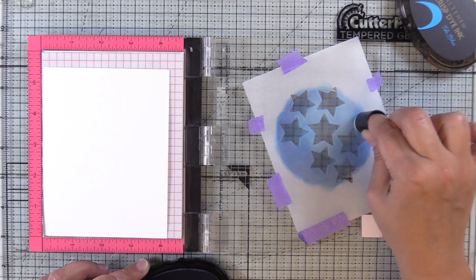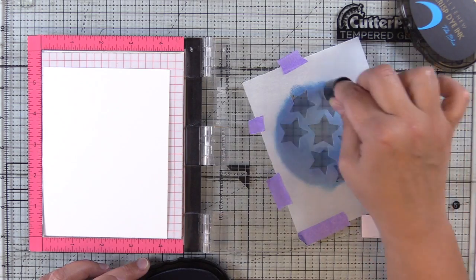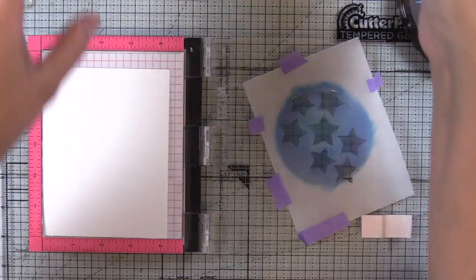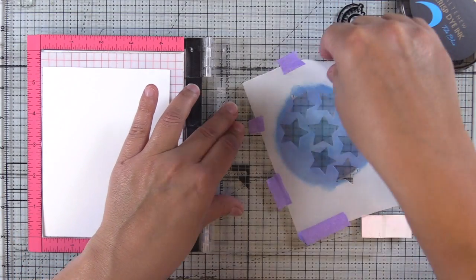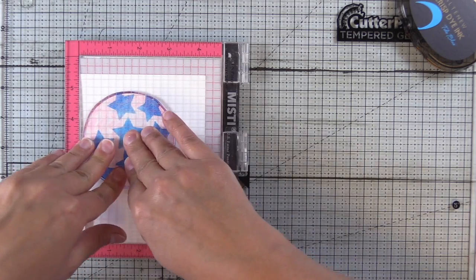Now I'm coming in with my darker shade and adding some shadow so that I can bring a little bit of dimension to this balloon. I'm leaving a highlight area with my mid-tone and then peeling off the DIY stencil and we're going to stamp our stars.